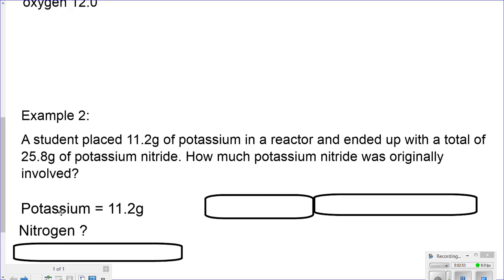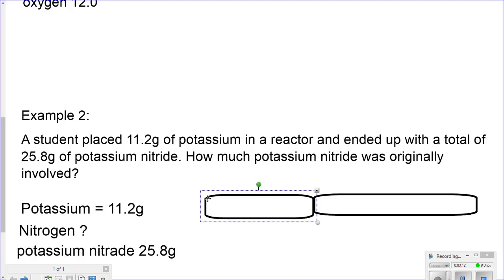I have 11.2 grams of potassium. I have an amount that I don't know of nitrogen. And the compound, the combination is 25.8. So, if my total is 25.8 and I began with 11.2 grams of one substance, then the other substance is the remaining.